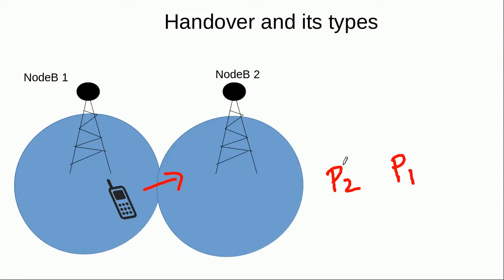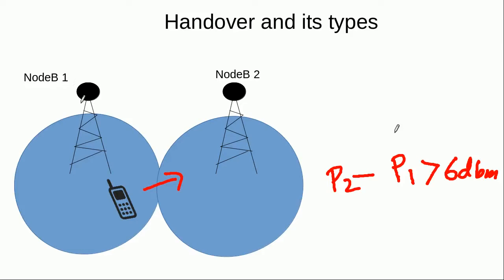So in that case, with the passage of time, power P2 being received from Node B number 2 would be increasing, while the power being received from Node B number 1, which is P1, would be decreasing. So when this difference between these two powers increases a certain threshold — for example, 6 dBm — this means that the power of Node B number 2 is 6 dBm higher than the power received from Node B number 1 by this mobile. So this mobile would get connected with Node B number 2, and this procedure is known as the handover.